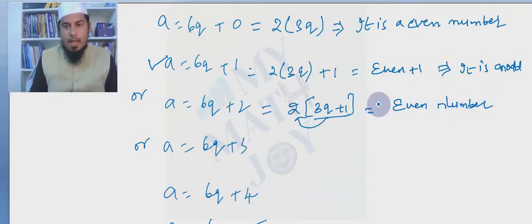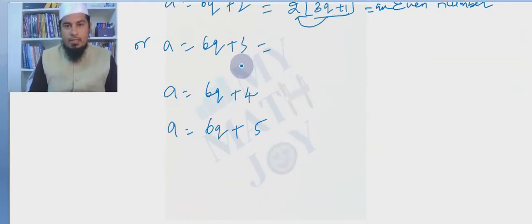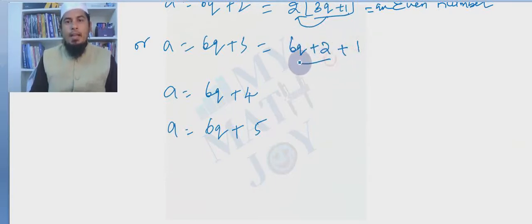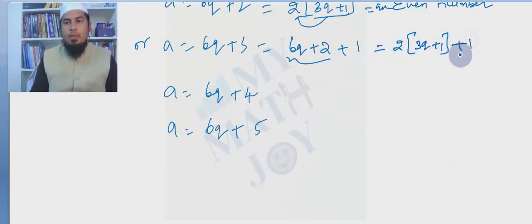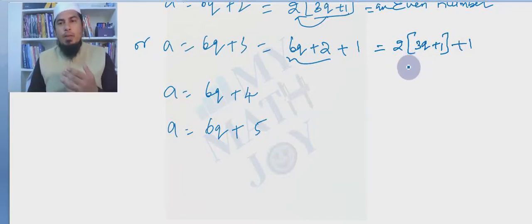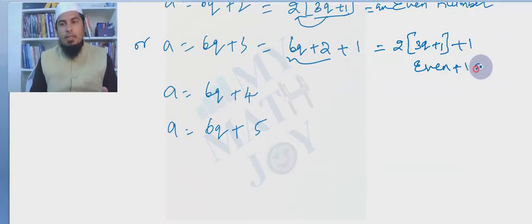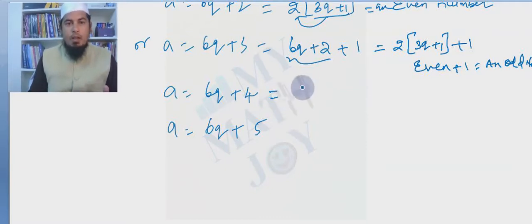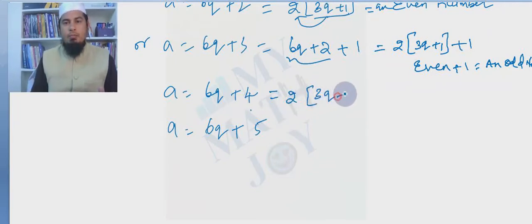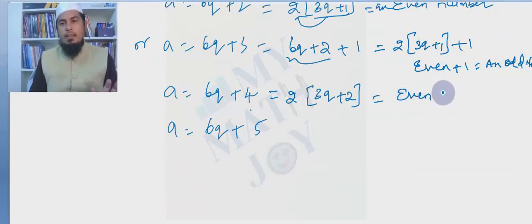For 6q+4: taking 2 common gives 2(3q+2), which is an even number. For 6q+5: we write 6q+4+1, take 2 common from 6q+4 to get 2(3q+2)+1, which is even+1 — an odd number.